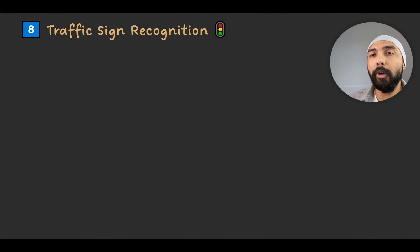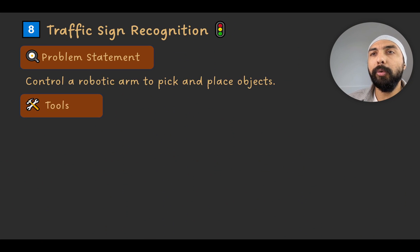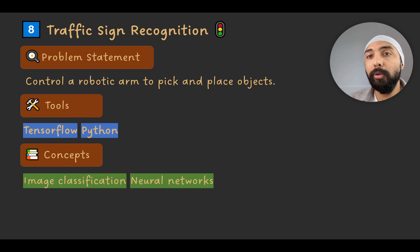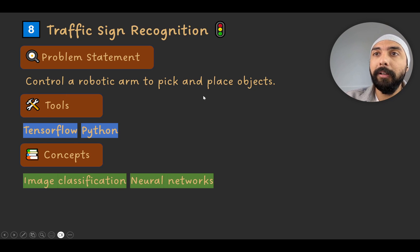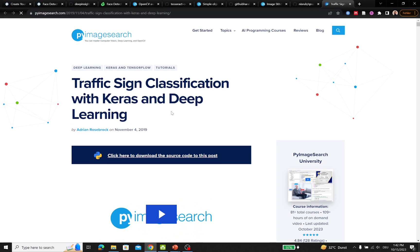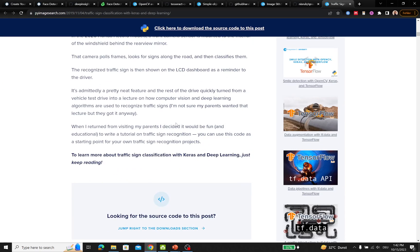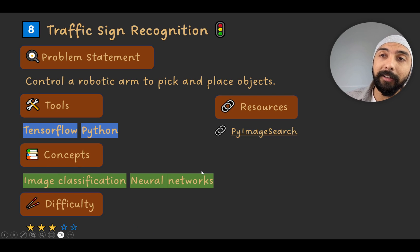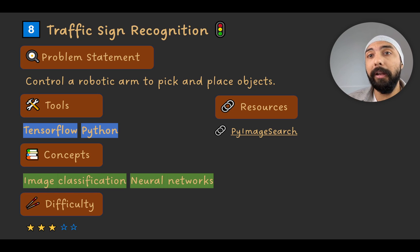Project number eight is traffic sign recognition. You'd recognize traffic signs in an image using TensorFlow and Python, employing neural networks and image classification. A great resource is a PyImageSearch article titled 'Traffic Sign Classification with Keras and Deep Learning.' PyImageSearch has tons of computer vision projects you can explore, and the projects listed here are specifically beginner-friendly — you can start building them without any prior experience.